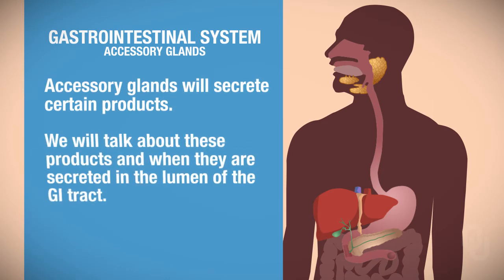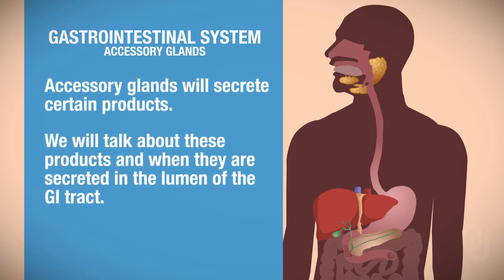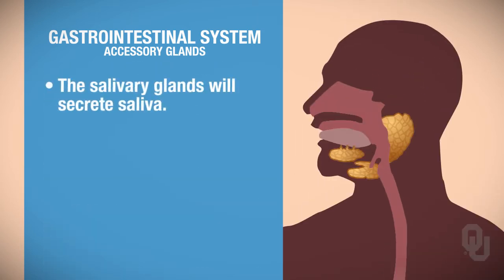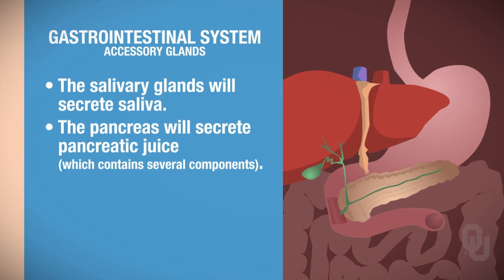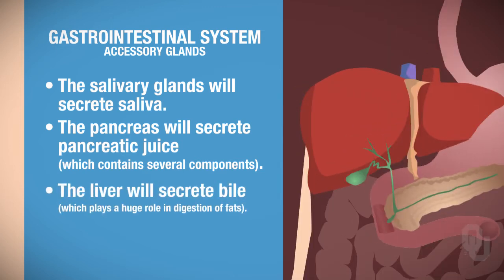Each of these accessory organs will secrete certain products. We'll talk about what those products are and when they are secreted into the lumen of the gastrointestinal tract. The salivary glands secrete saliva and a few other things. The pancreas secretes pancreatic juice, which has many components. And the liver secretes bile, which plays a fundamental role in the digestion of fats.